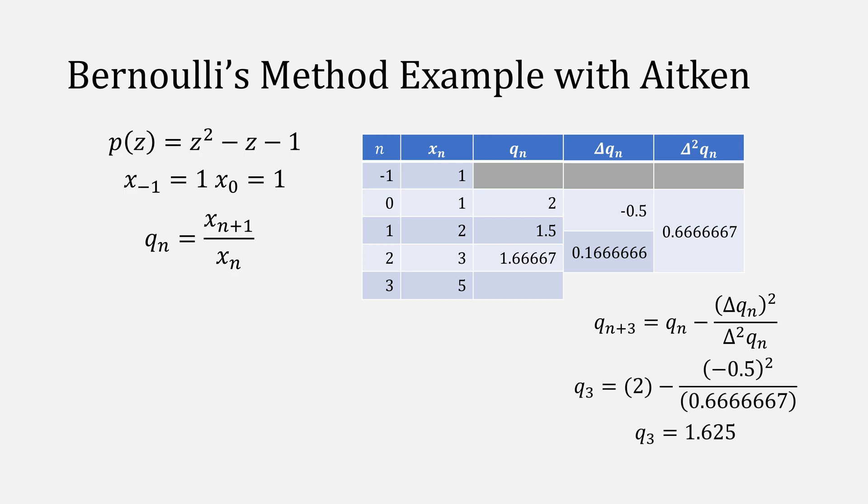Here's the thing. We have our equation for q, which then gives us our equation for our next value for x. Simply multiply q3 times x3, giving us the value of 8.125 for our next value for x.